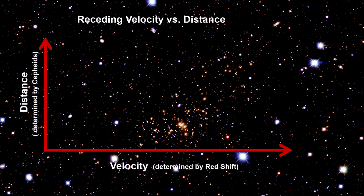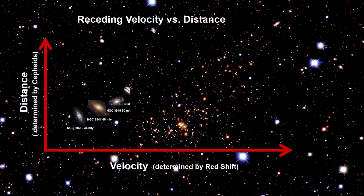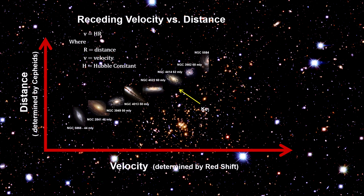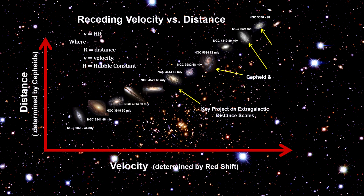You may recall that we used redshift to determine a galaxy's receding velocity, along with the inverse square law for standard candles like Cepheid variables and Type Ia supernovae, to determine a galaxy's distance. Combined, they gave us Hubble's law and the Hubble constant.